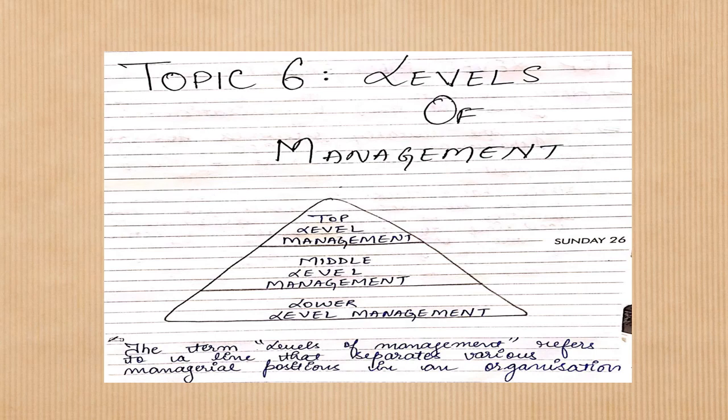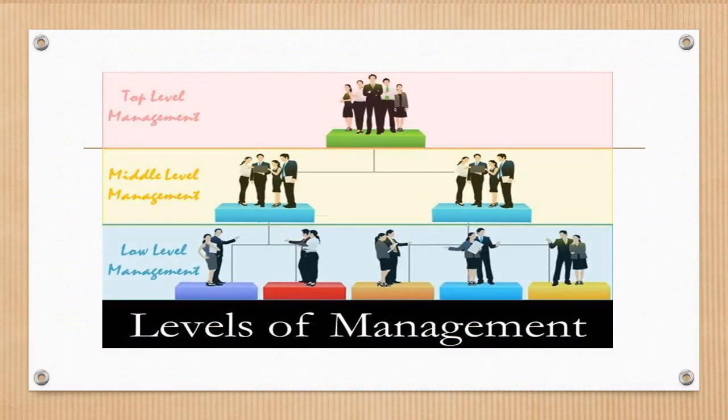Let's understand the meaning of Levels of Management. When we play games, there are Level 1, Level 2, Level 3 — each level is more difficult than the previous one. Similarly, in an organization, managers divide their duties according to difficulty, which increases at the top level. So basically, there are 3 levels in an organization: Lower level, Middle level, and Top level.